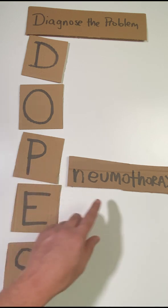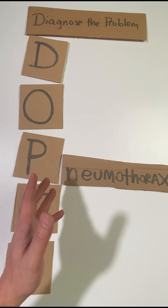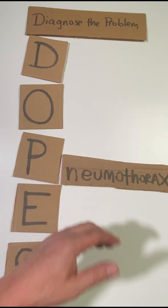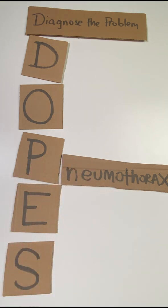P stands for pneumothorax. Could this person have developed a pneumothorax with their central lines going in? Maybe that caused a pneumothorax. Just positive pressure alone can cause barotrauma and lead the person to have a pneumothorax.